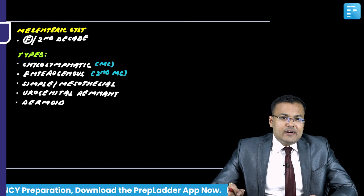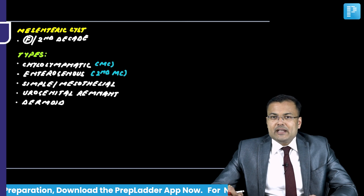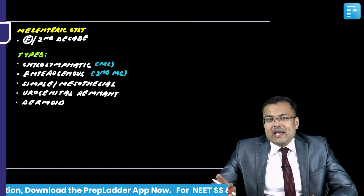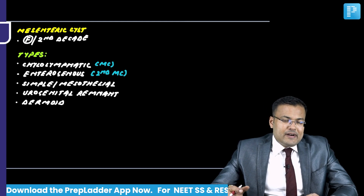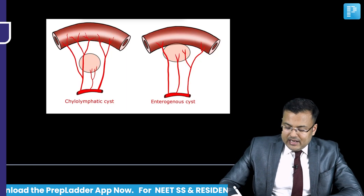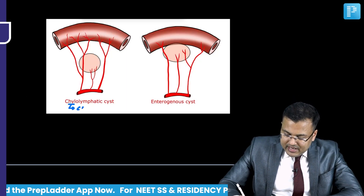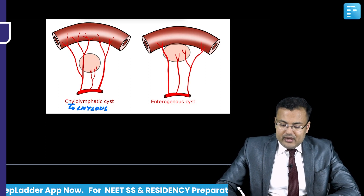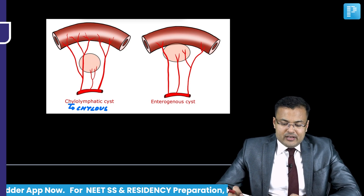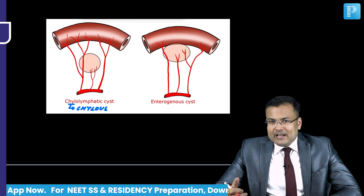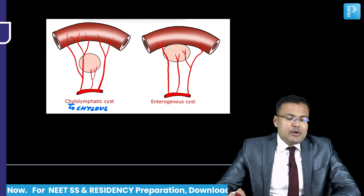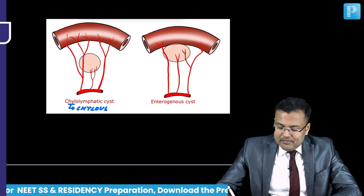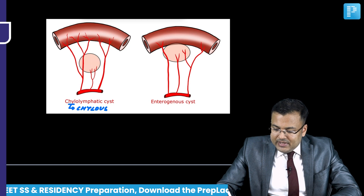In detail, we are going to discuss chylolymphatic and enterogenous. Chylo means chyle's collection. Lymphatic means it is caused by an abnormality of lymphatics. In chylolymphatic cyst, these patients are having congenitally misplaced lymphatics in the ileum.